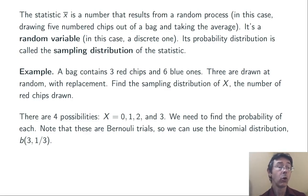When we talk about the total number of successes in three trials, we're talking about a binomial distribution. In this case, with n equals 3, and p equals 1 third, because there are three red chips out of nine total. Three ninths is 1 third.